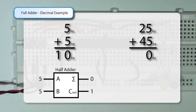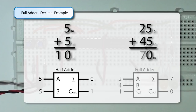We have the question: what is 5 plus 5? Well, 5 plus 5 equals 0 with a carry of 1. We place that 1 on the line. Now we have a new question: what is 2 plus 4 plus 1? To get the answer of 7, we have three inputs and two possible outputs. Our three inputs are A (which is 2), B (which is 4), and carry in (which is 1), with our sum and carry out as outputs. So we have gone from two inputs and two outputs with a half adder to three inputs and two outputs for a full adder.